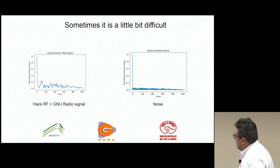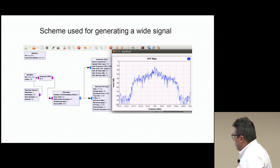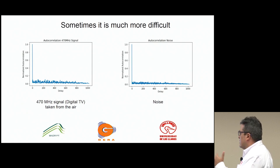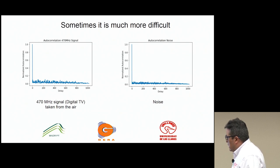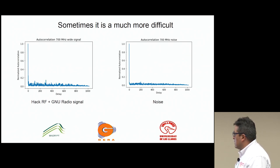Sometimes it is a little bit difficult. We can see that one autocorrelation tends to look like another. This was generated with a HackRF and GNU Radio — a wider signal — and this one was taken from the digital TV channel at 470 MHz. As you can see, these are similar, so it is difficult to extract features to distinguish between them. Similarly, another wide signal generated with HackRF and GNU Radio is also very similar to the TV signal, making it difficult to distinguish between the two.